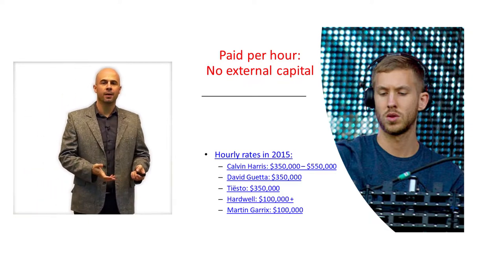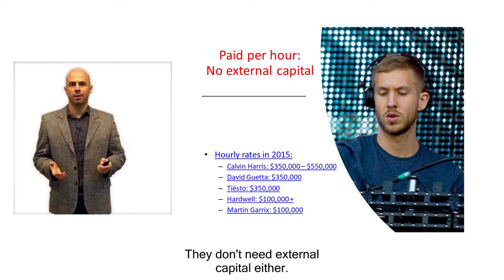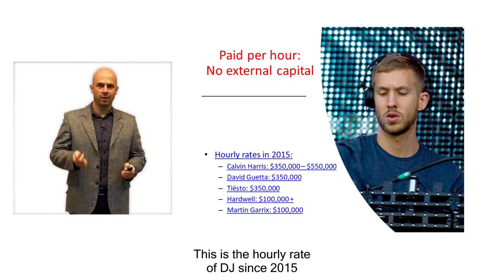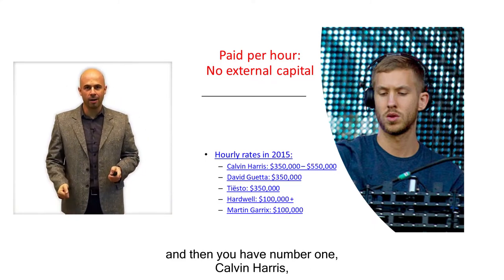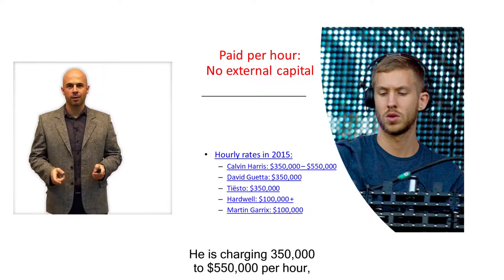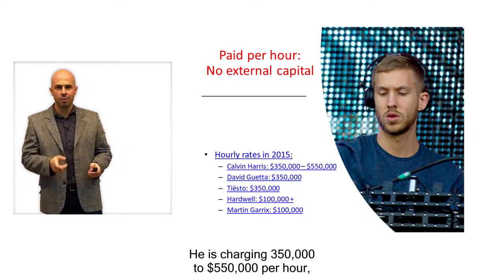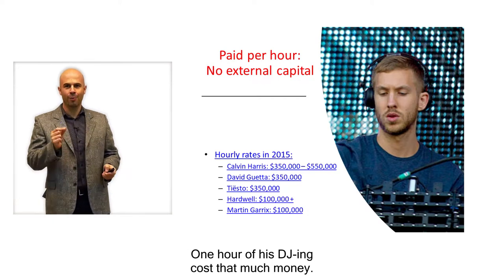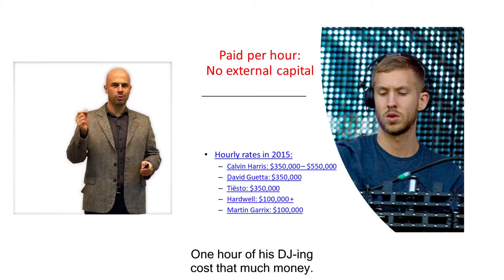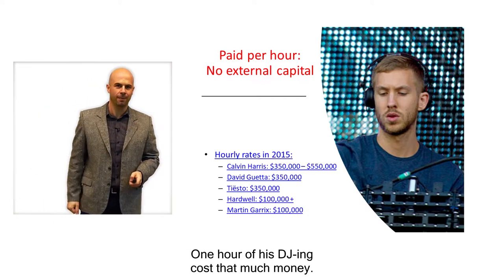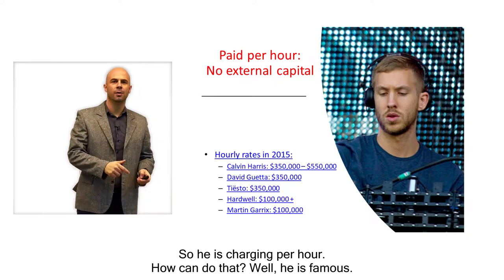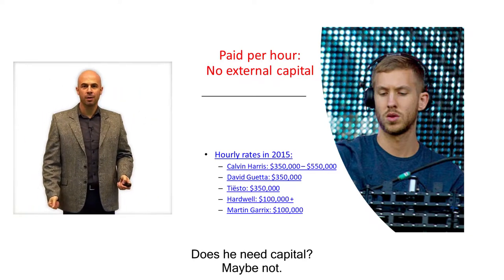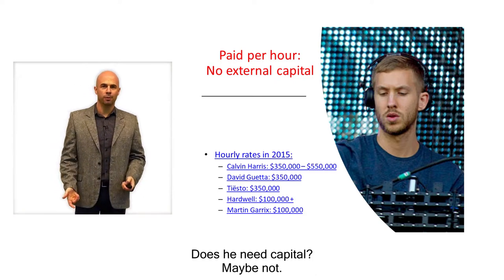Other people are paid per hour and don't need external capital either. Looking at the hourly rate of DJs in 2015, number one was Calvin Harris — he was charging 350,000 to 550,000 dollars per hour. One hour of his DJing costs that much. He's famous. Does he need capital? Maybe not.